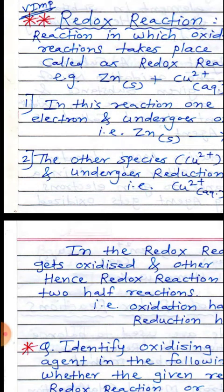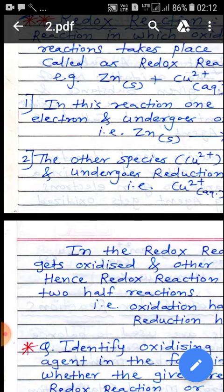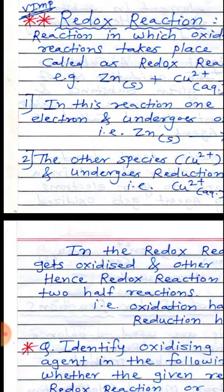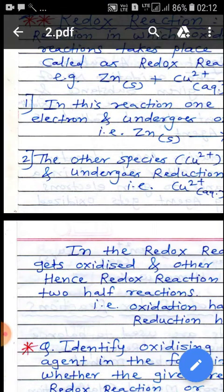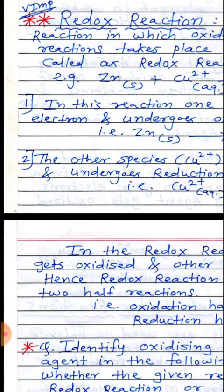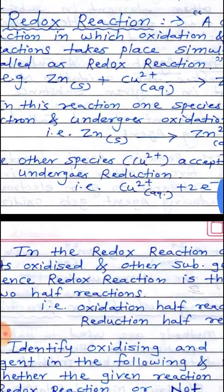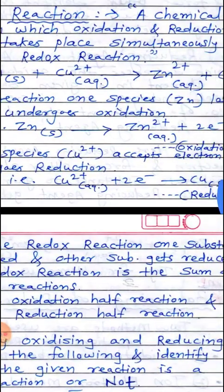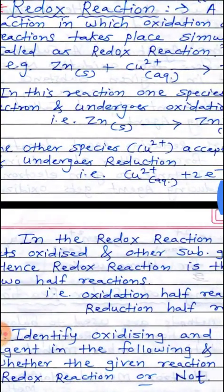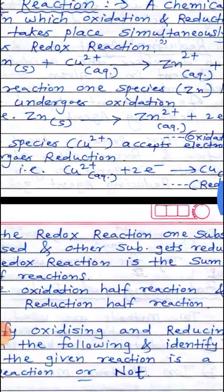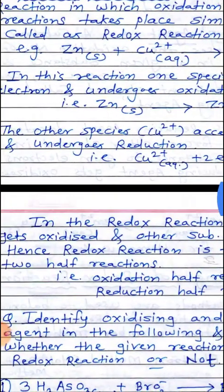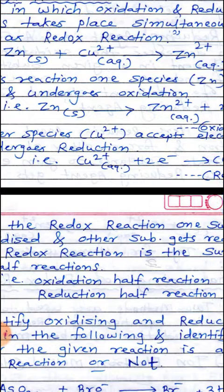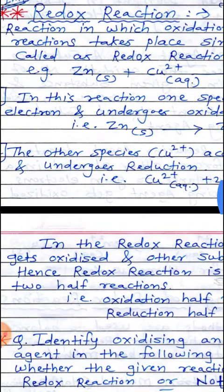Now in the Redox Reaction chapter, we have to see the next part. If we are asked the question to explain Redox Reaction with a suitable example, then we have to write the definition of this Redox Reaction first. A chemical reaction in which oxidation and reduction reactions take place simultaneously is called a Redox Reaction.